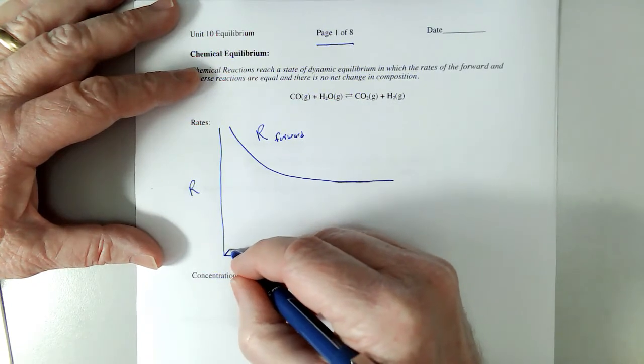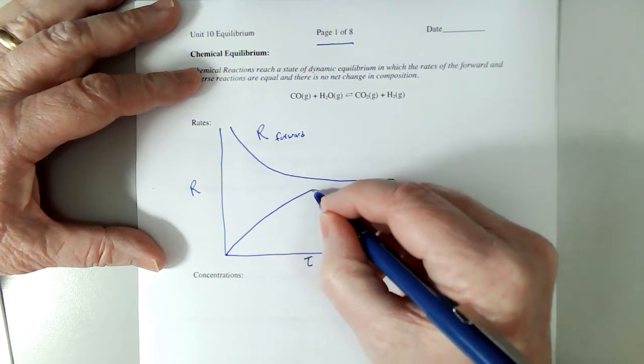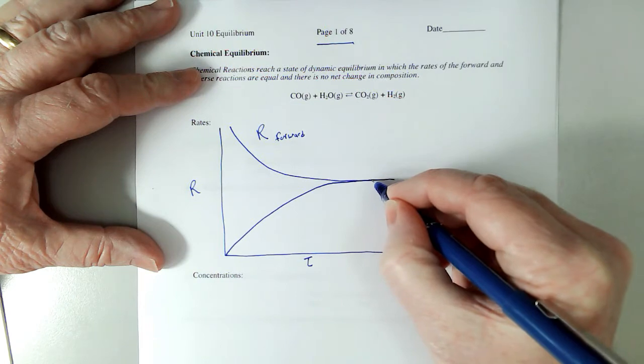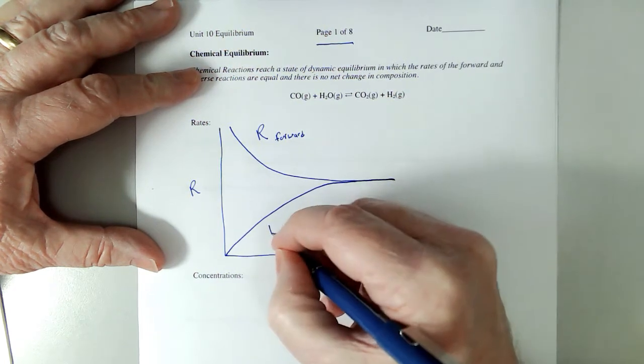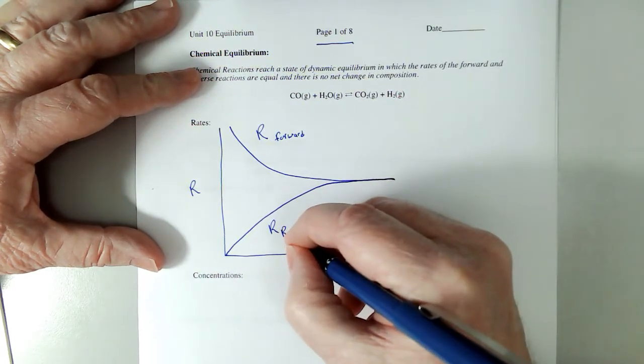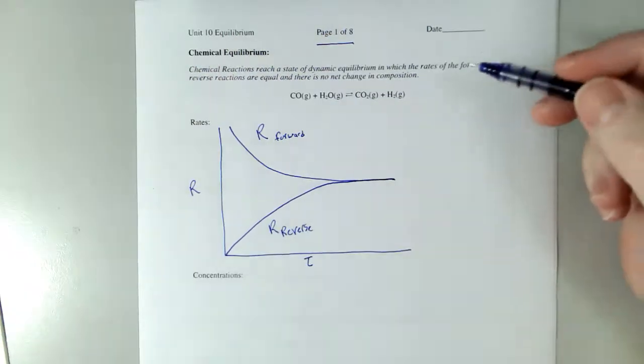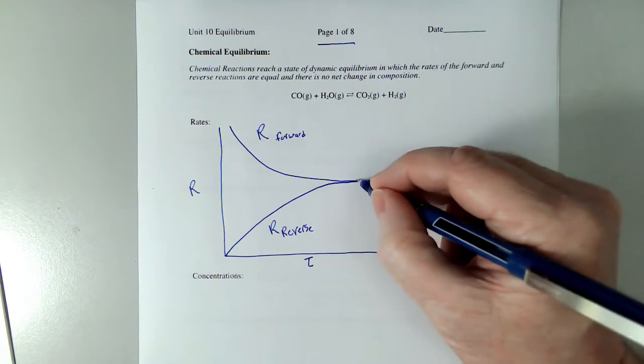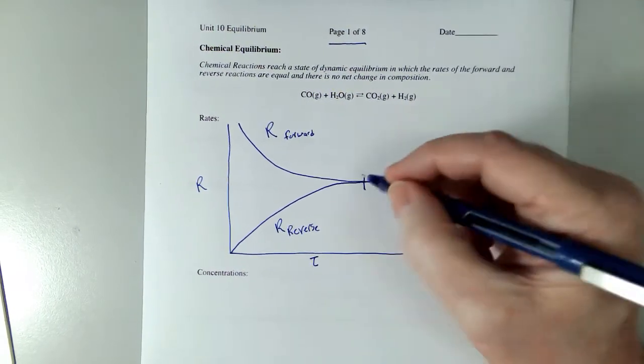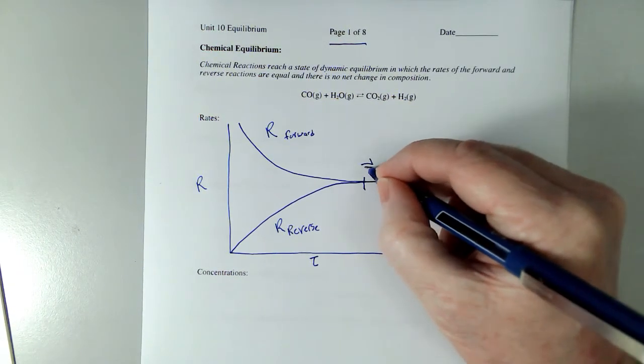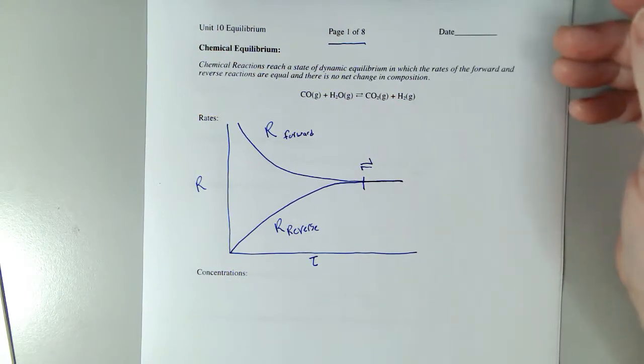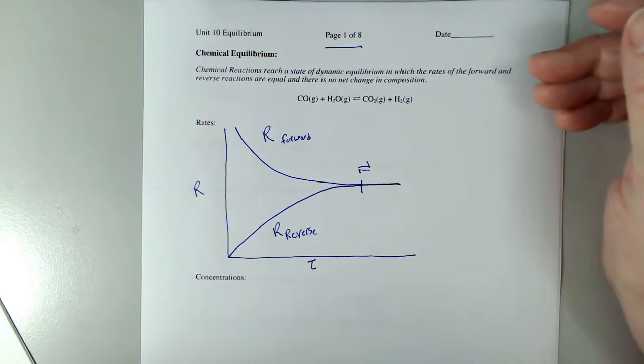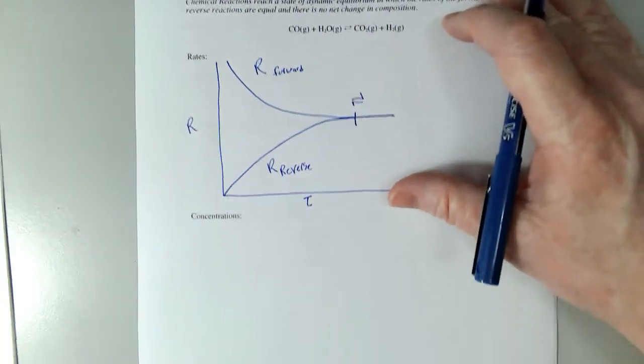Now, the rate of the reverse reaction starts at 0, increases, and eventually becomes equal with the forward reaction. So when the rate of the reverse reaction and the forward reaction become equal, which are basically at this point, that is the point when equilibrium is attained in the system. Please be aware that these are reaction rates. They're not concentrations.